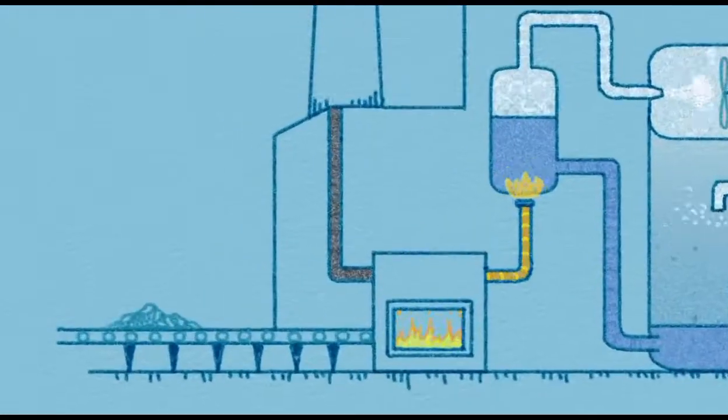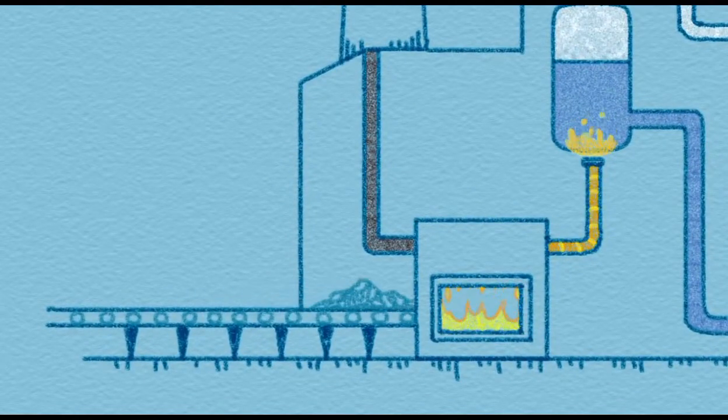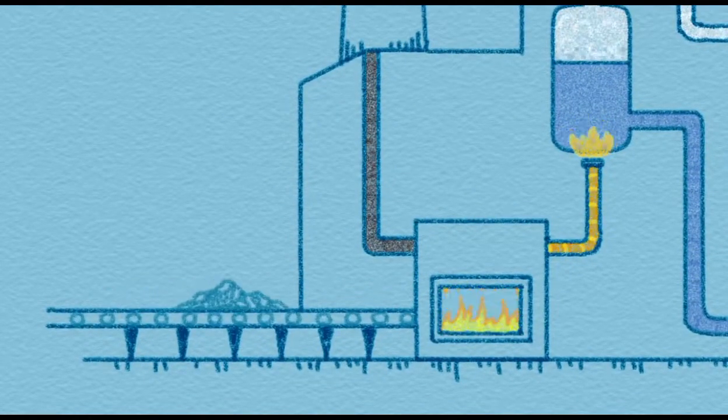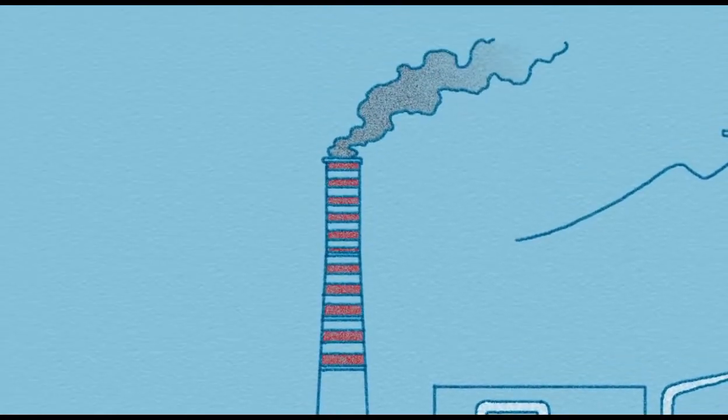First, it goes into a furnace burner where it is burnt. From the combustion, smoke is produced, which escapes through the stacks of the power station.